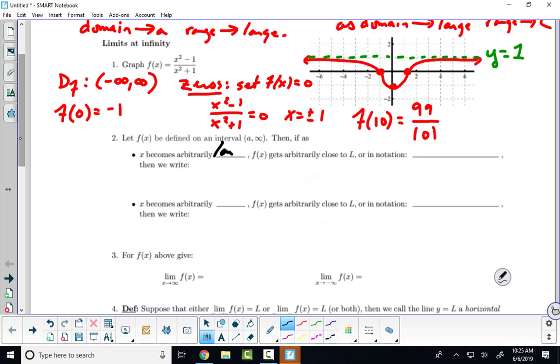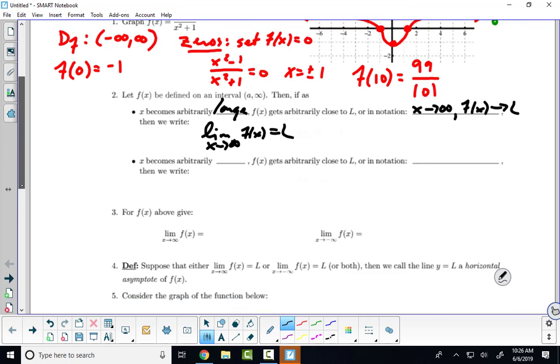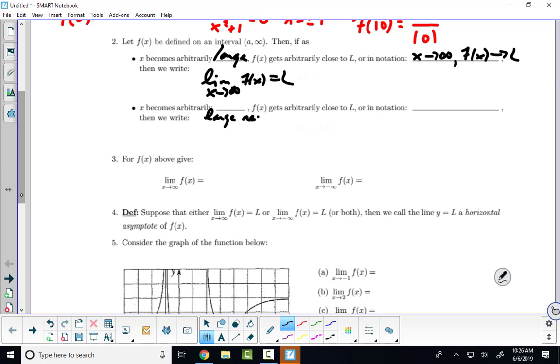So here we go. This is what we say. If as x becomes arbitrarily large, f(x) gets arbitrarily close to L, meaning as x approaches infinity, f(x) approaches L, how do we write that in limit notation? We will write the limit as x approaches infinity of f(x) equals L. In this second statement here, as x becomes arbitrarily large but negative, f(x) becomes arbitrarily close to L, meaning as x approaches negative infinity, f(x) approaches L.